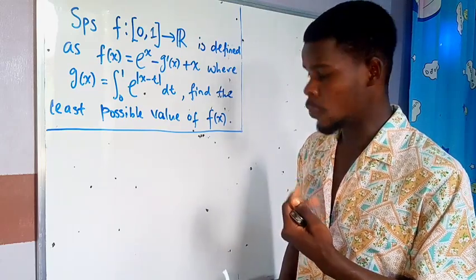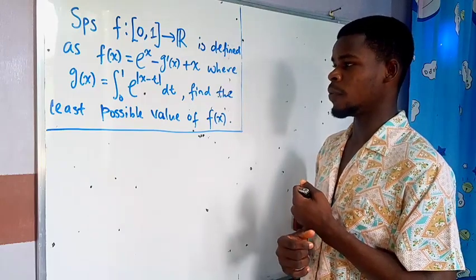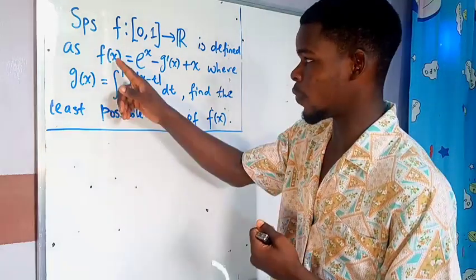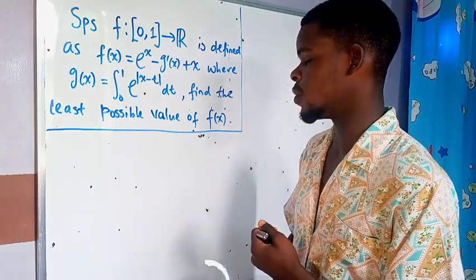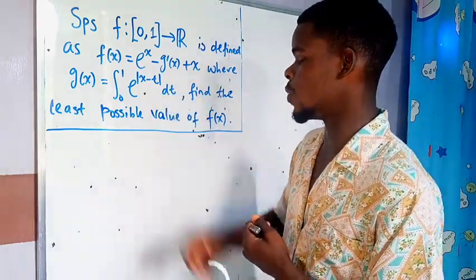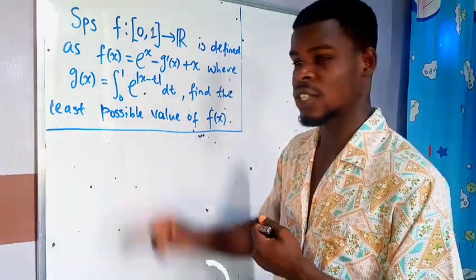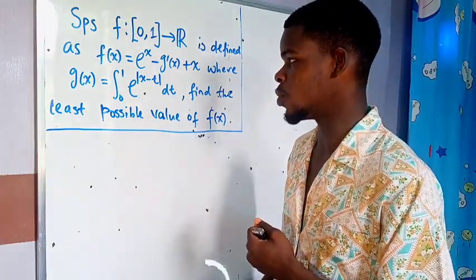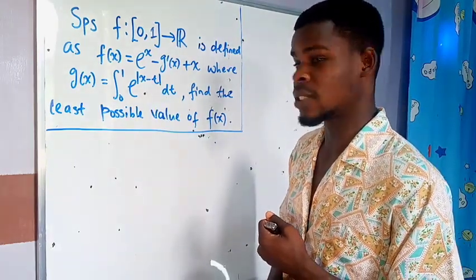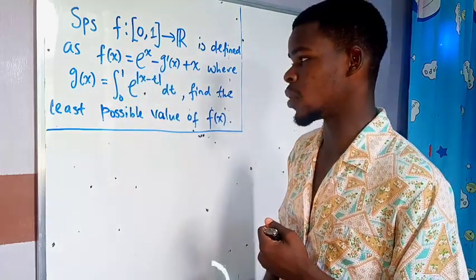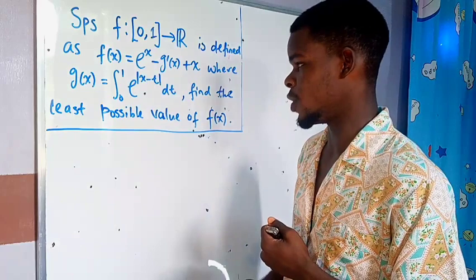To find f(x), we need to know the derivative of g(x). We've been given g(x) and could just differentiate it directly. But I'm not going to do that, considering first that we have an absolute value function here, and secondly, if I integrate this, you are going to learn a lot more than just differentiating it.